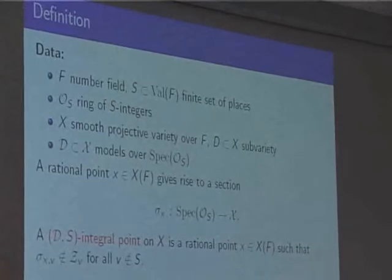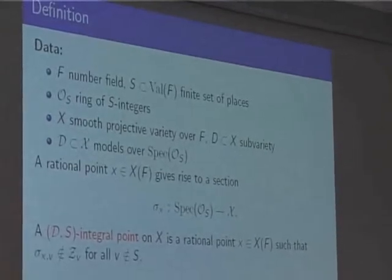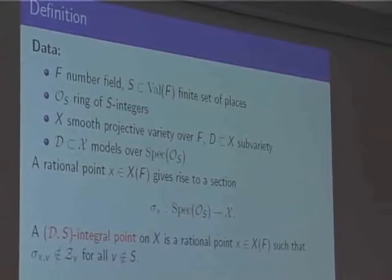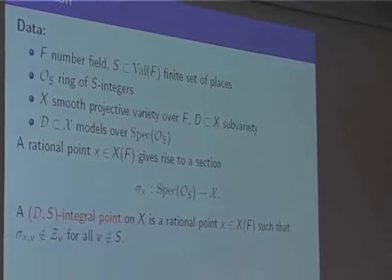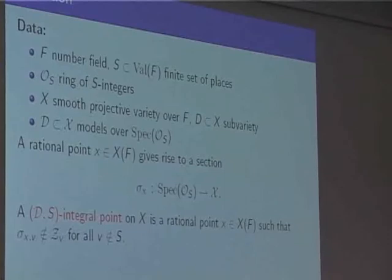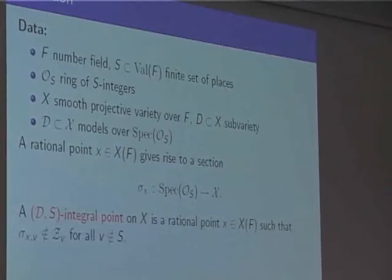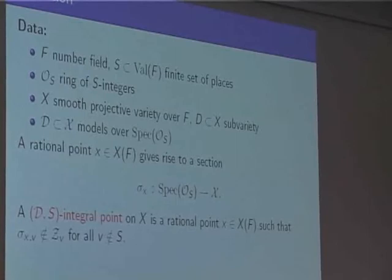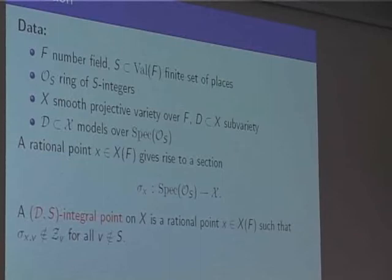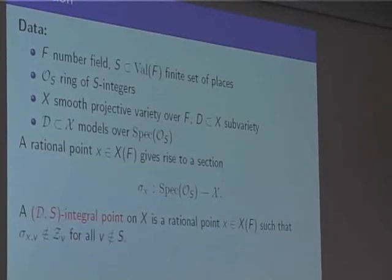We fix integral models — it's all projective, so the coefficients are in our ring of integers. A rational point is then a section with integral coordinates after clearing denominators. A D-S-integral point on X is a rational point with the property that for all places outside S, this section doesn't meet the reduction of the boundary D at that place.